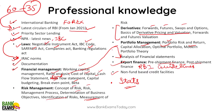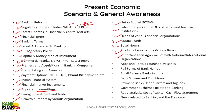Government schemes are also important — I missed them for the previous section. Government schemes are part of the professional knowledge section. All government schemes related to banking — Mudra Scheme, Jan Dhan Yojana, Atal Pension Yojana, any scheme related to money, banking, financial inclusion, or gender equality that gives benefits to people — are really, really important. Apps launched by banks, full forms of bank names, small finance banks, bank slogans, payment bank headquarters, taglines, government schemes related to banking, ratio analysis, cost of capital, cash flow statement — these are in the professional knowledge section and news related to banking and the economy.